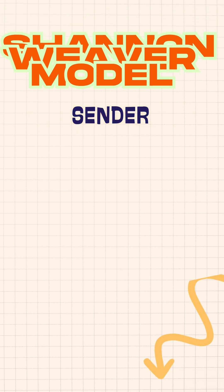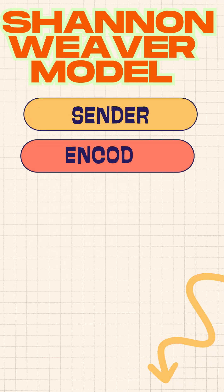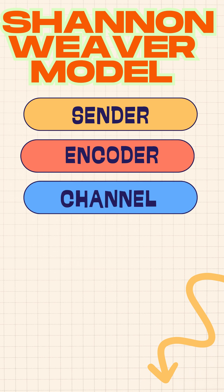The encoder is where messages are converted into signals — like your voice into sound waves — which are then passed through a channel: air, a phone line, or maybe a WhatsApp group. But sometimes these channels stop working correctly.